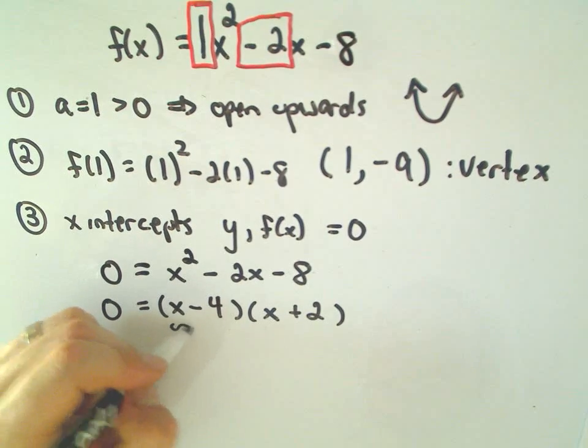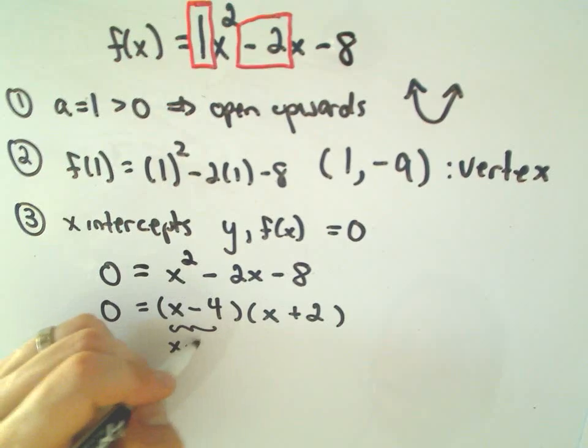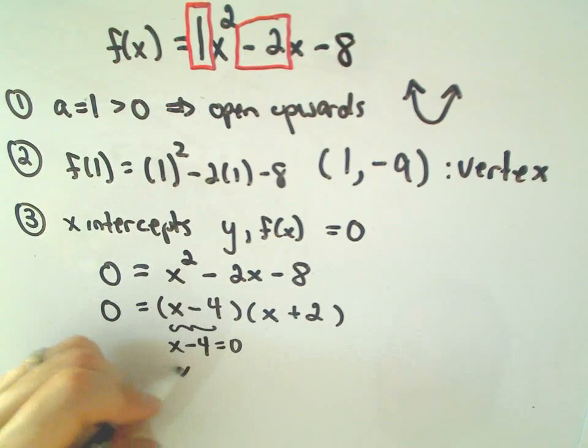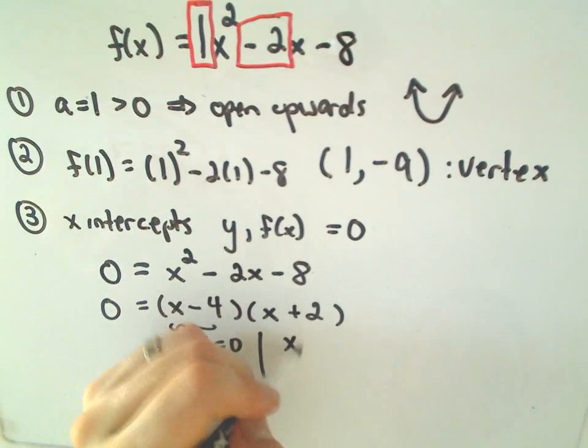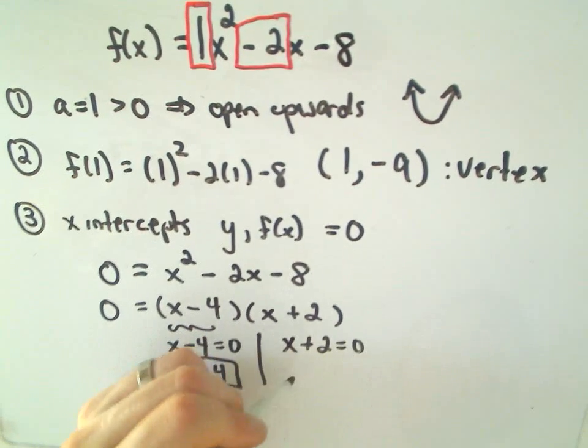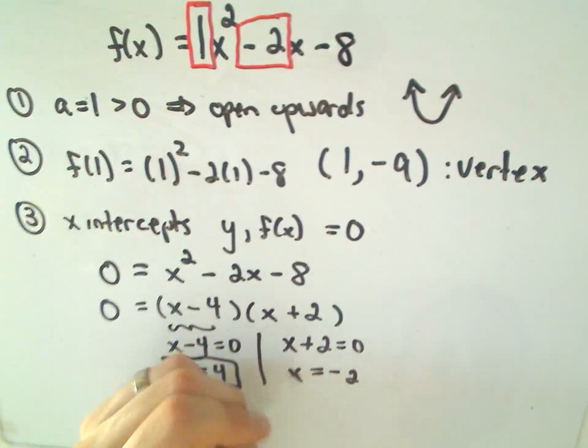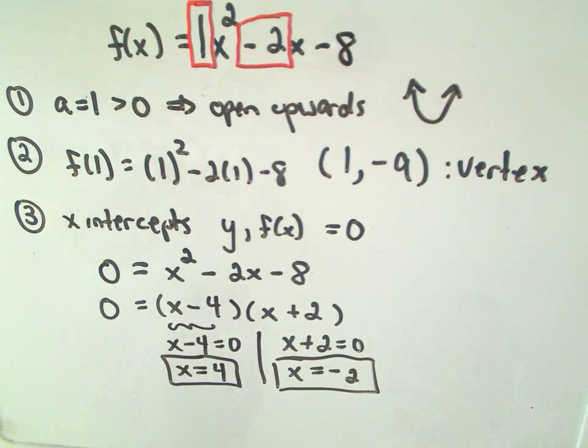And if we set each piece equal to 0, we'll set x - 4 equal to 0. That'll give us the x-intercept of 4. If we set the other factor equal to 0, we'll get x equals negative 2. So it means our function has two x-intercepts.